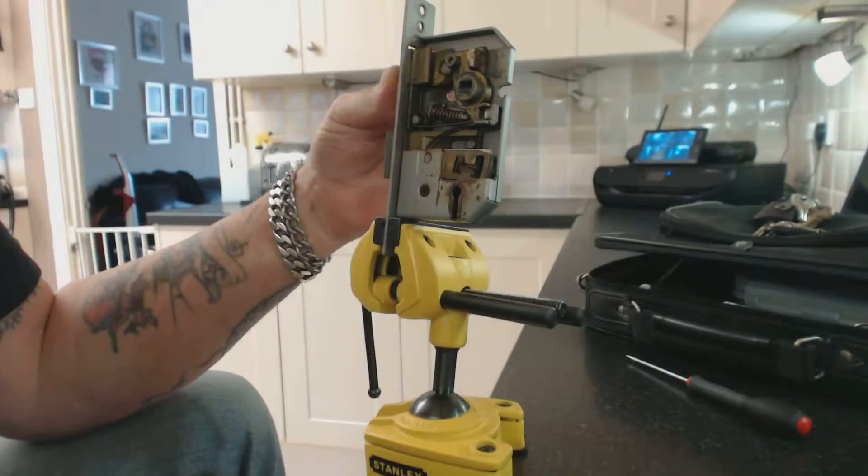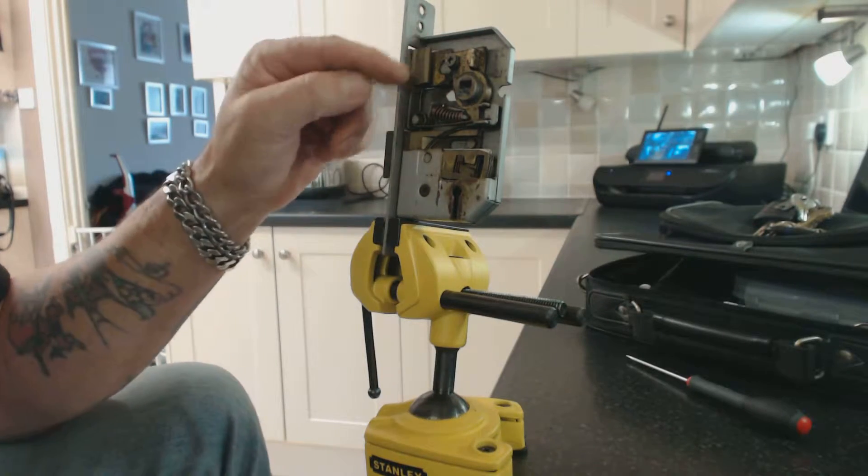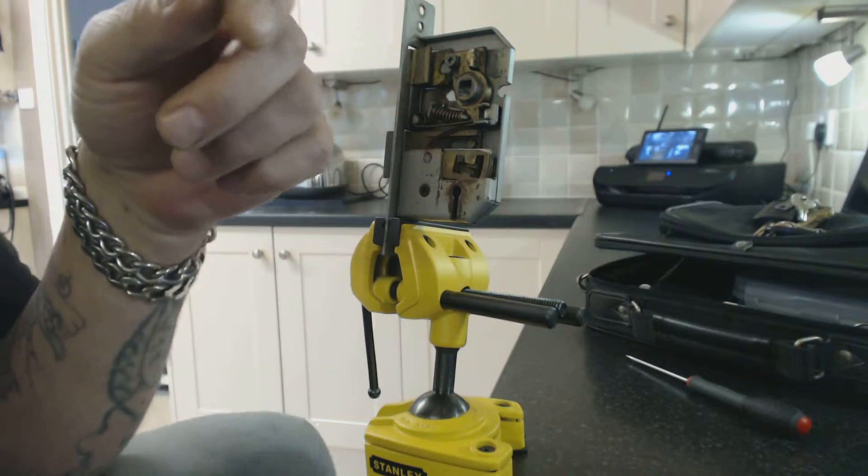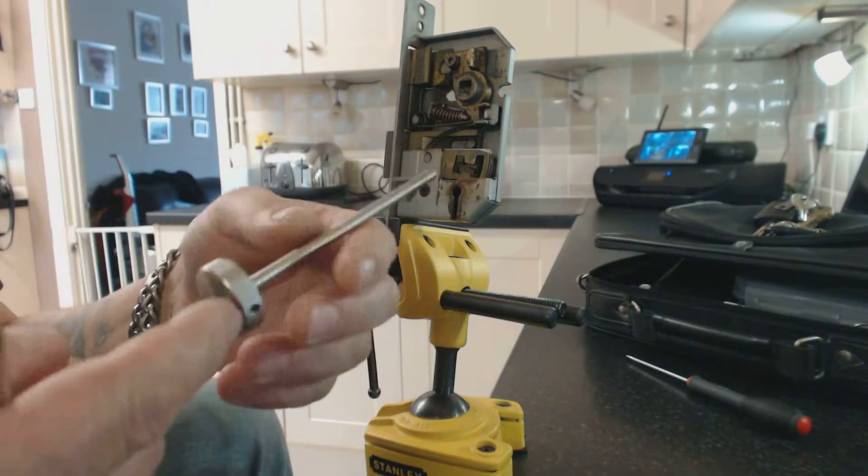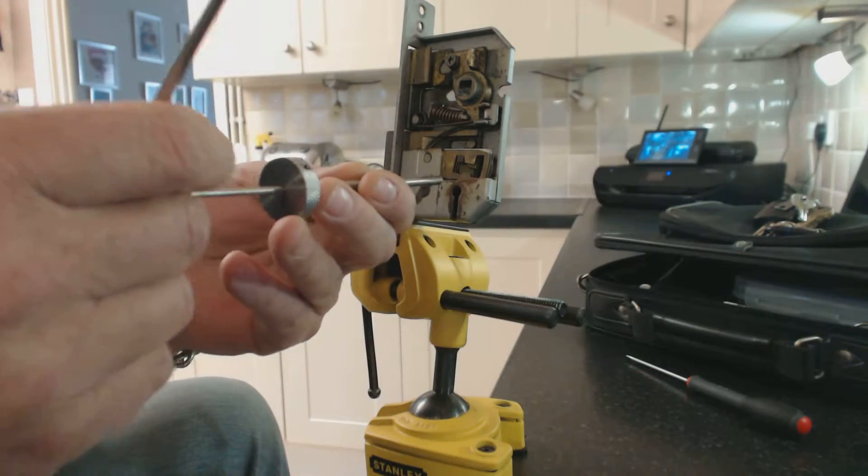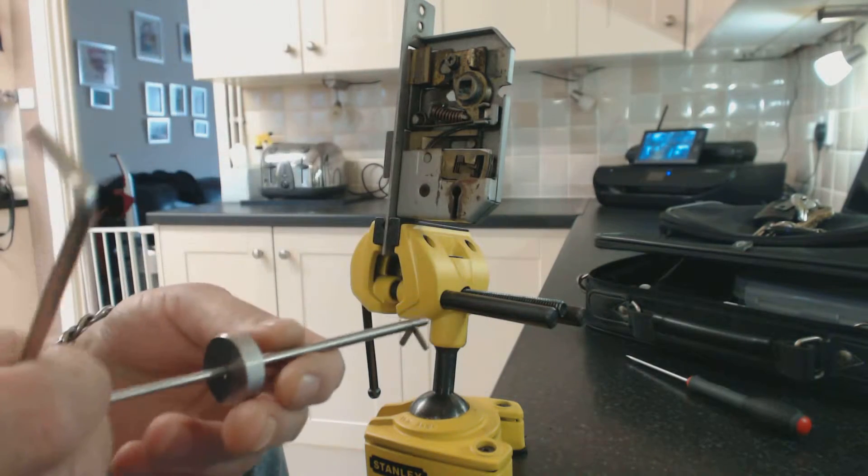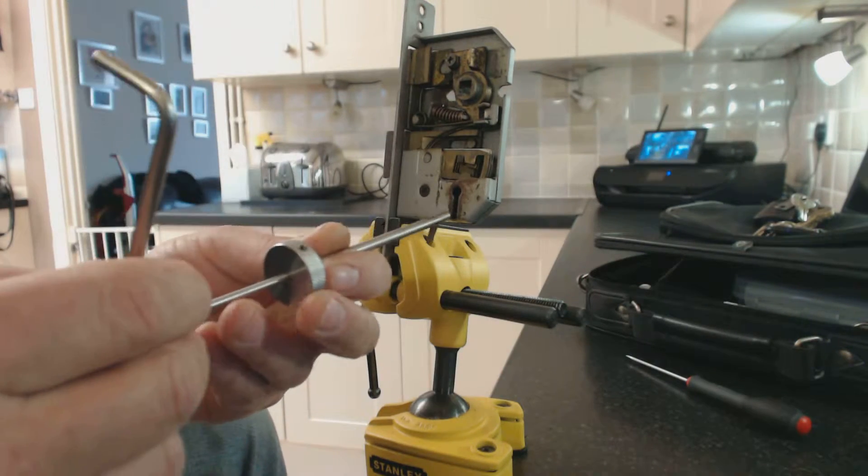We've got one of our training locks here with part of the side removed so you can see the actual internal workings. So when you're training you can get a feel and you can see what's actually happening. You won't get this when you're on an actual job though.